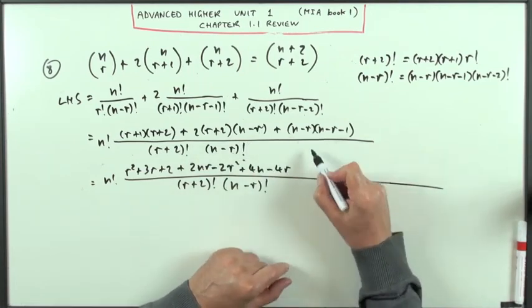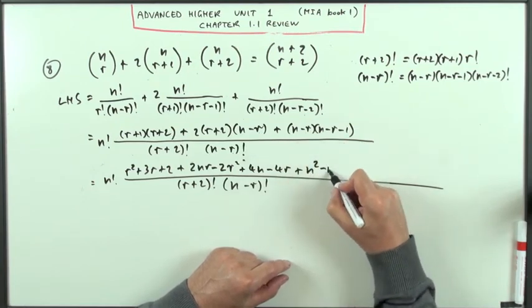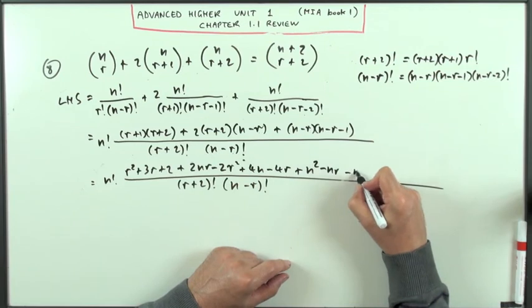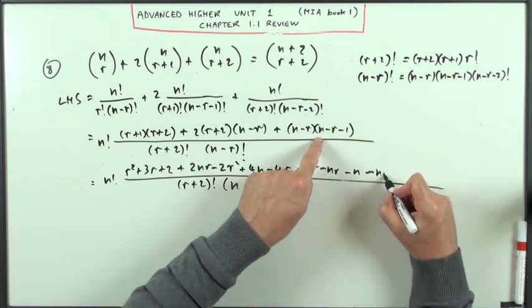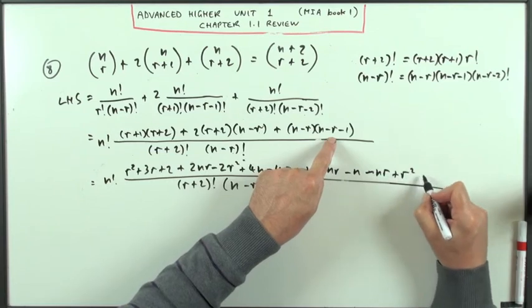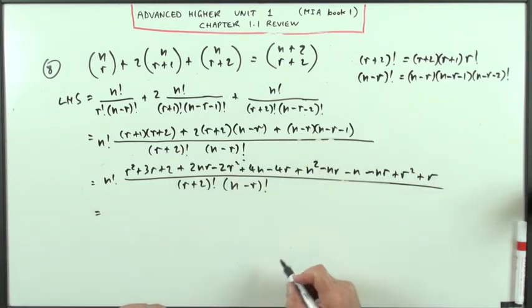Now I've got six parts here, just to spell out. I've got n squared, minus n r, minus n, minus another n r, plus r squared, and finally plus r. Looking a bit nasty, but this will all tidy up, so just in case of looking through them for what cancels.